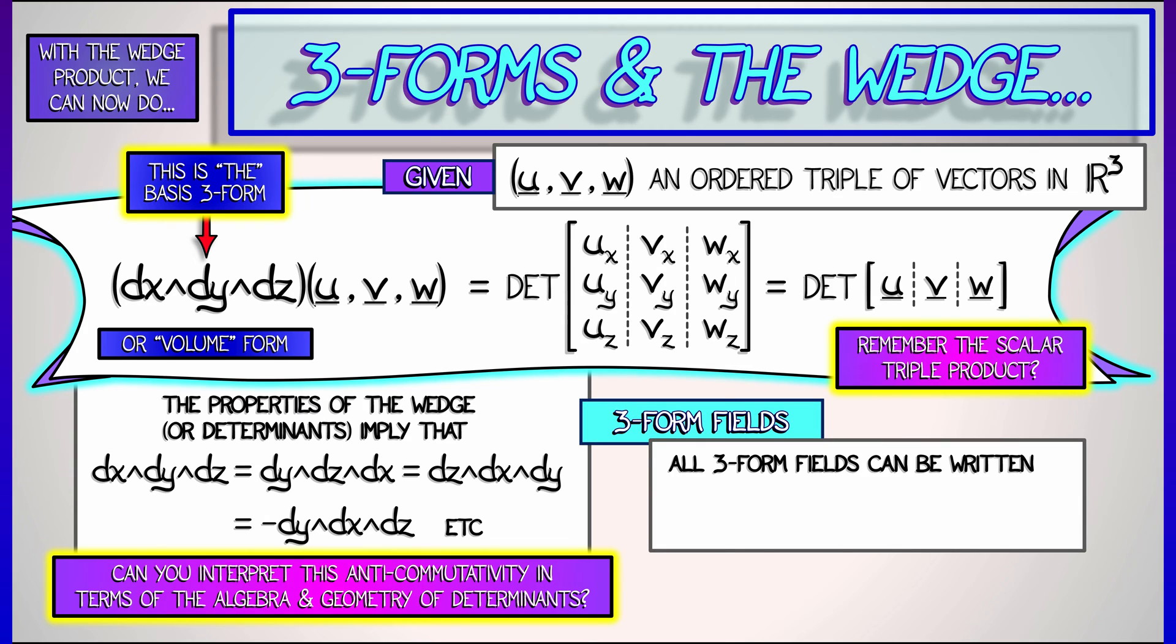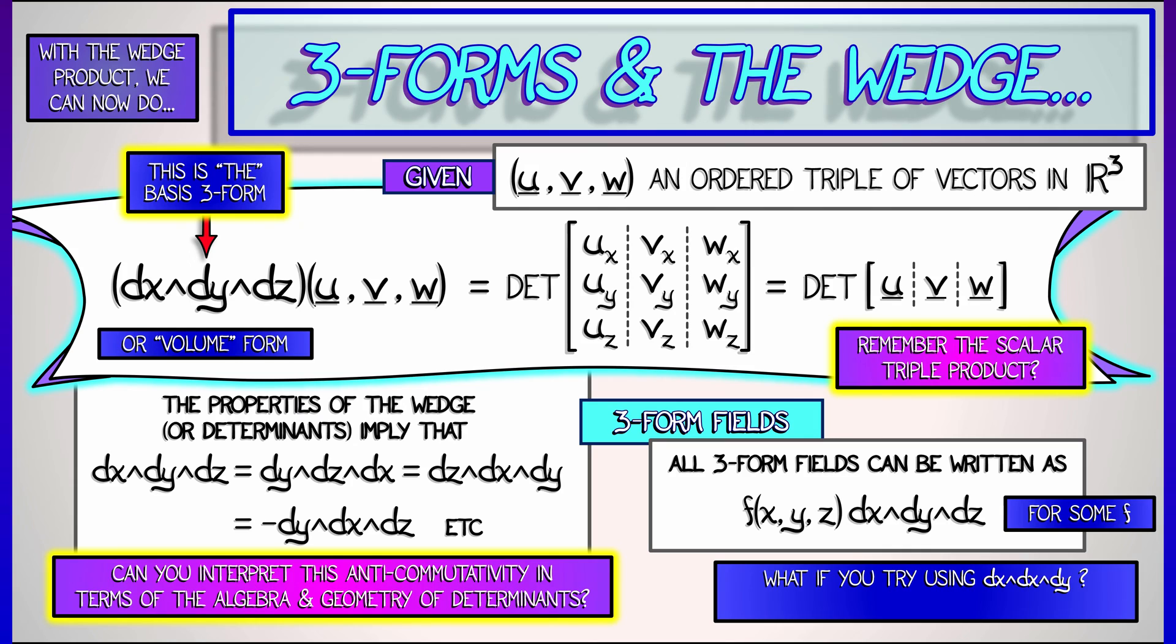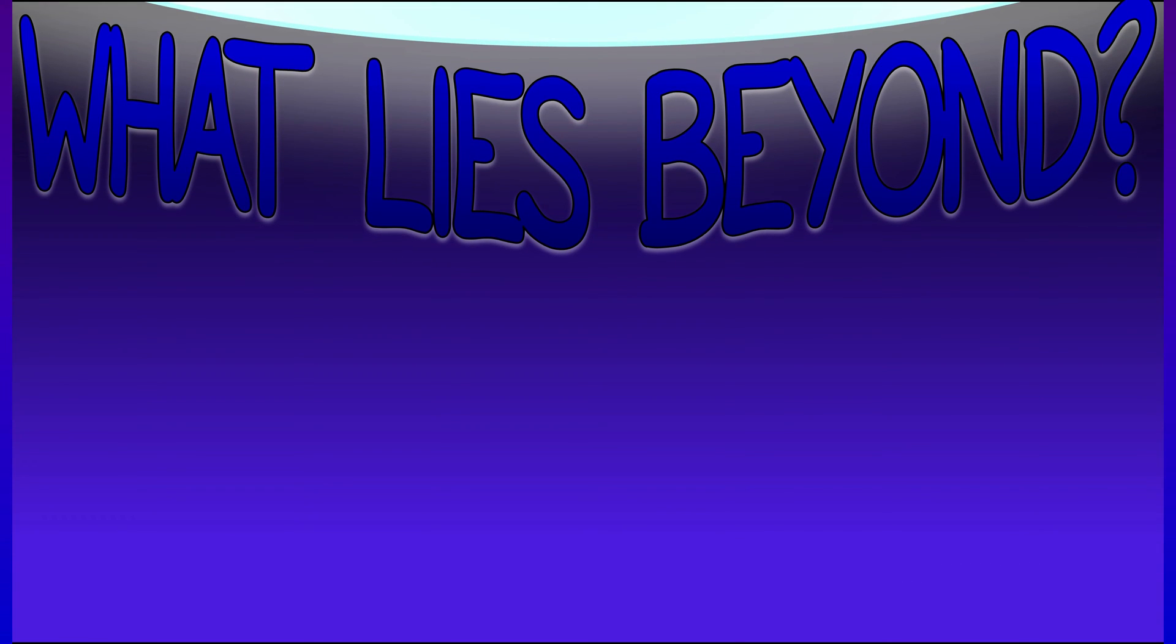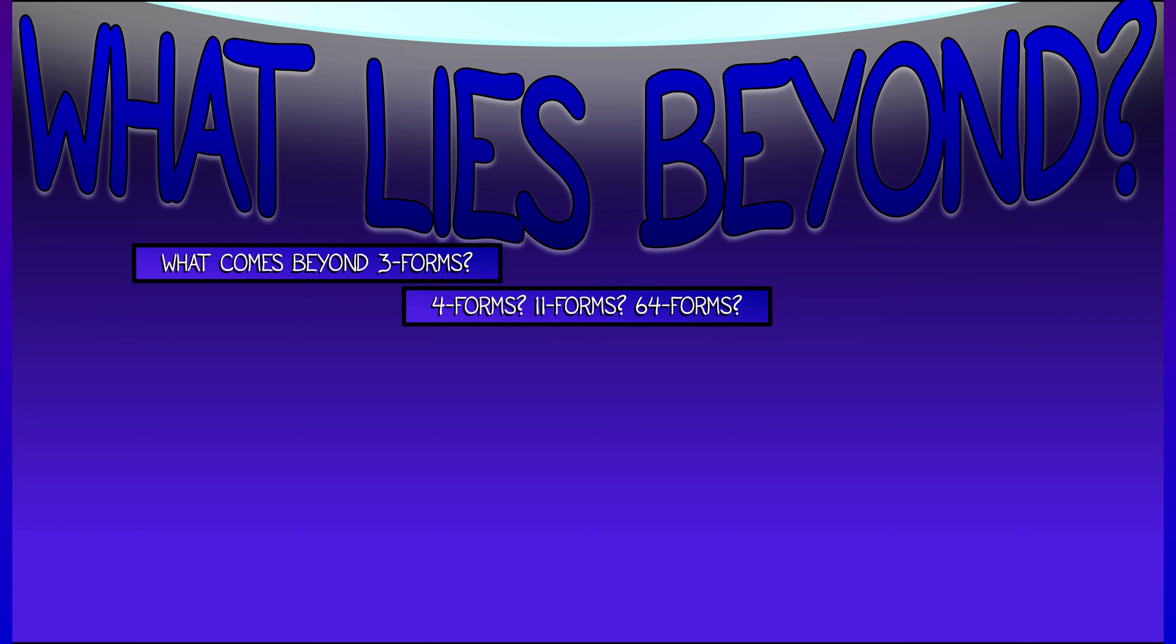That's it for basis three forms. Three form fields in R3 are all expressed as this basis three form times some scalar field, times some zero form field. Now, why do we only have dx wedge dy wedge dz? Why not some other three form like dx wedge dy wedge dy or something like that? Well, that's not going to be interesting. For the same reason that four forms or 11 forms are not interesting in 3D, because they're all dead. They're all zero. They're all nothing.